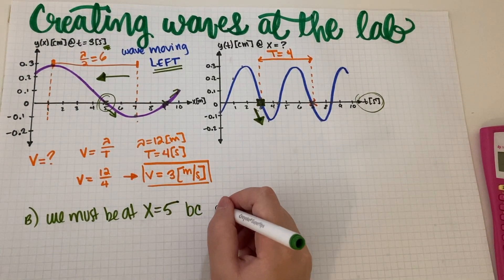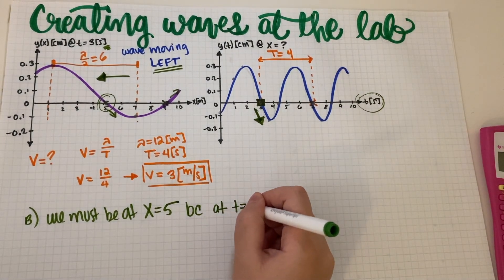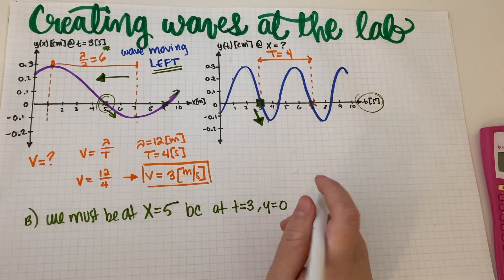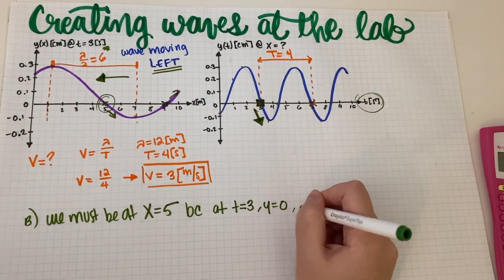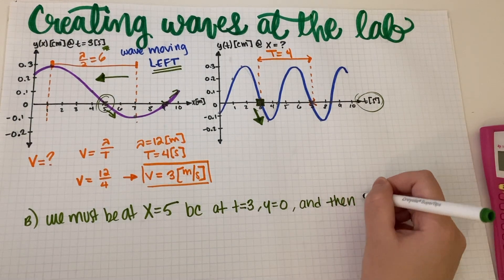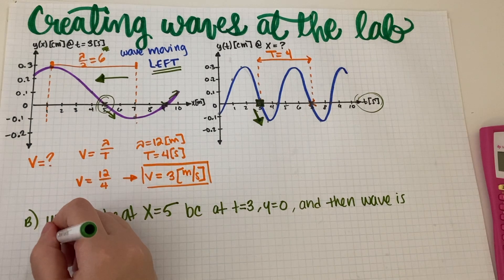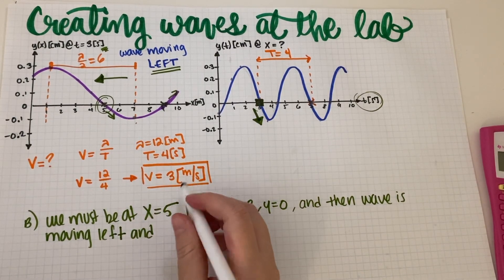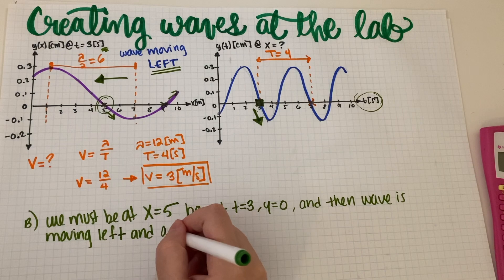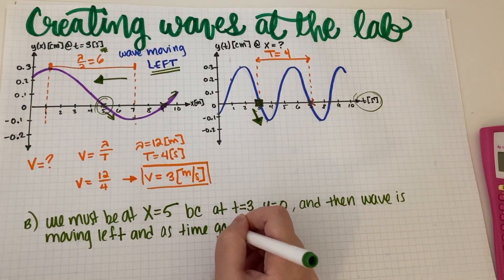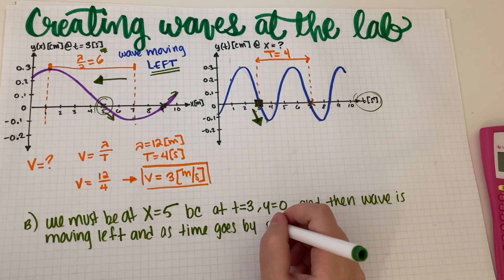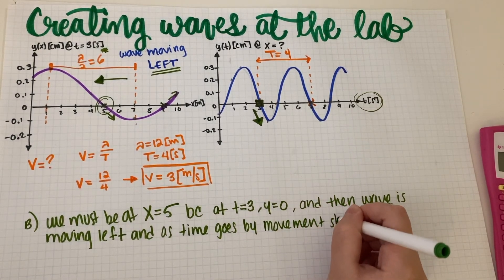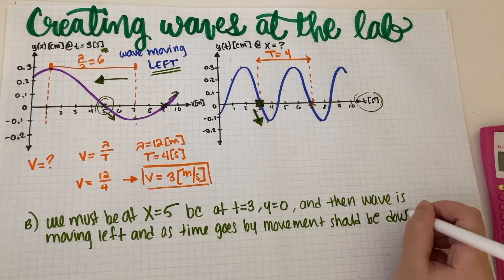x equals 5, because at t equals 3, y equals zero — leaving two possibilities — and the wave is moving left, so as time goes by the movement should be downward. That confirms x equals 5. That's Part B.